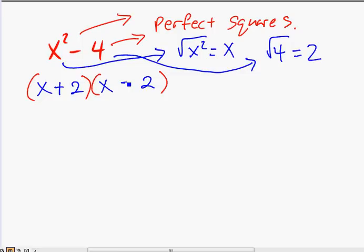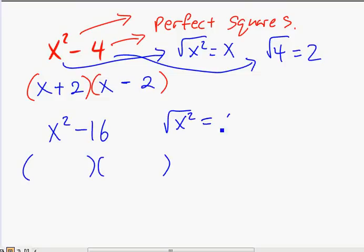Let's do another example. If we have x squared minus 16. Well, how do you factor these? Again, it's going to be two binomials multiplying each other. Find the square root of x squared and that's x. Put x, x. And find the square root of the last number, 16, which is 4. 4, 4.